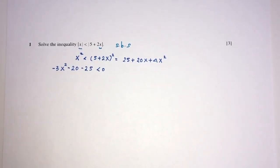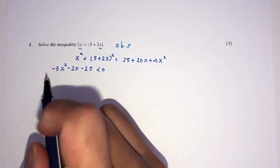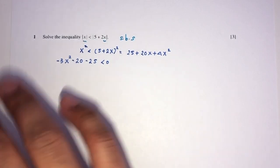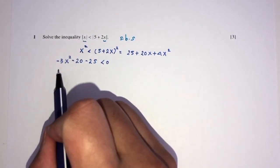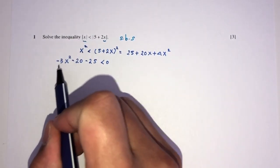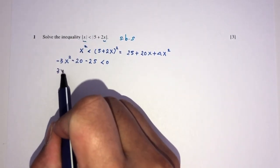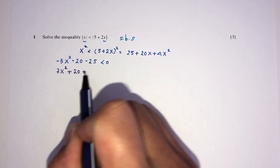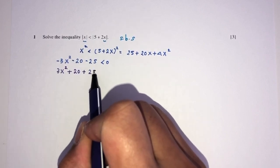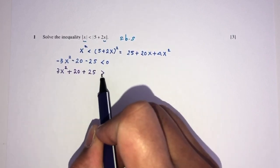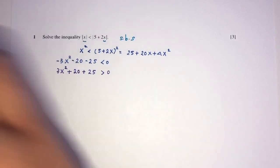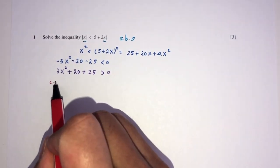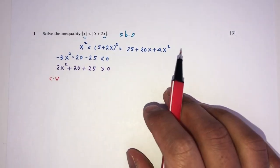I don't like to work with negative values, so let me change that. I can send everything to the other side: you will have 3x squared plus 20x plus 25, and this side will change to the other way. So finally, we can find the critical values of this equation.